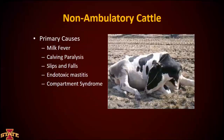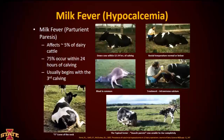Primary causes of non-ambulatory cattle include milk fever, calving paralysis, slips and falls, endotoxic mastitis, and compartment syndrome. It's important to understand those causes and know how to approach each one of them — that is the purpose of having standard operating procedures.